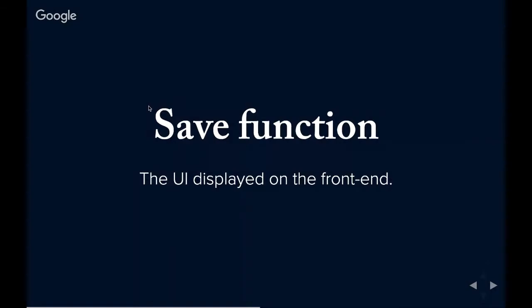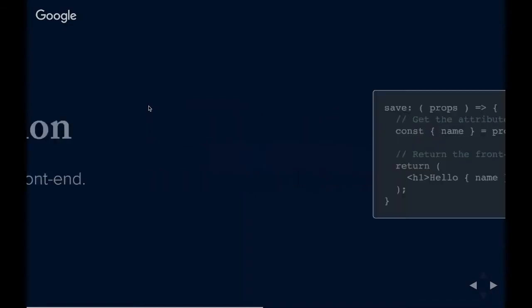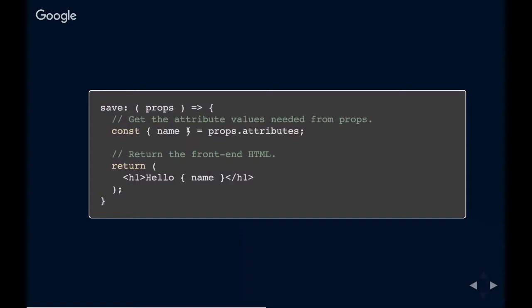The second required function is a save function. The save function defines the UI displayed on the front end — when you publish or update your page and view it as a front-end user, the save function defines what is displayed. Similarly to the edit function, it grabs all my attributes from the props variable and then returns the front-end HTML. In this case, it returns the contents inside an H1, saying 'hello' and then outputting the value of my name variable. That's the very basic overview of registering a block.